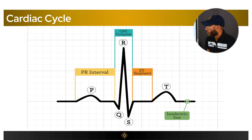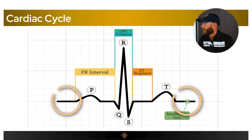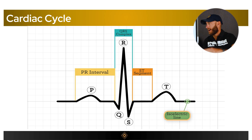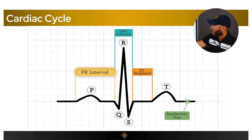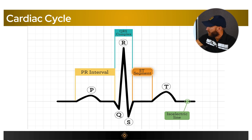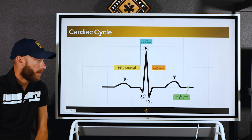The isoelectric line is the flat baseline before the P wave and after the T wave — no waves, no activity. The PR interval starts at the beginning of the P wave and extends to the start of the QRS complex. The ST segment runs from the end of the S wave to the beginning of the T wave. These intervals are very important landmarks on the EKG.